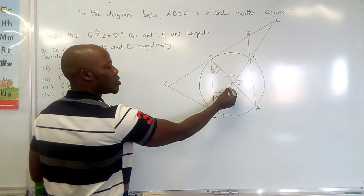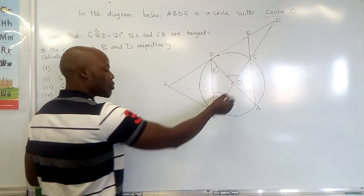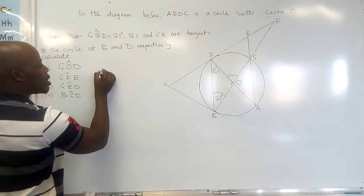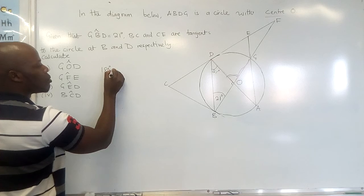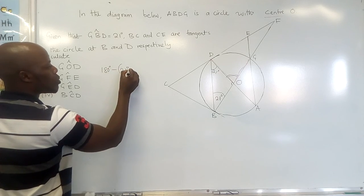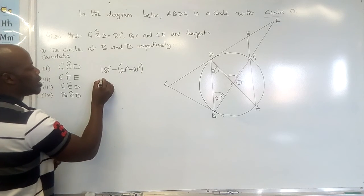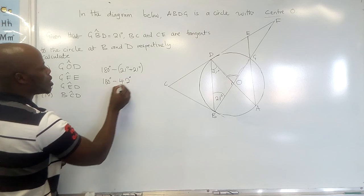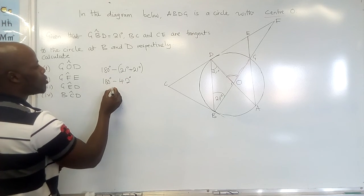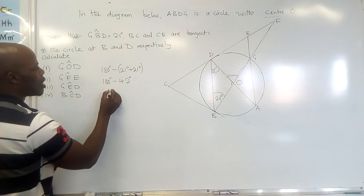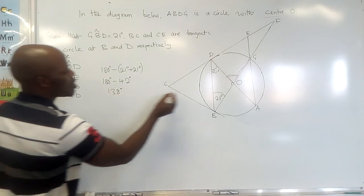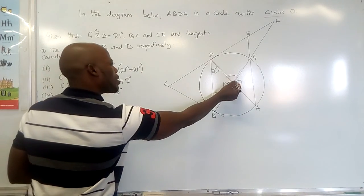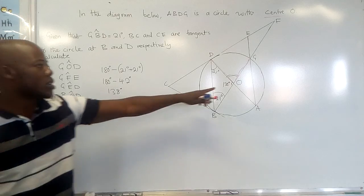So if we want to find this angle, we'll first find this inner angle, then use the straight line property where we subtract from 180. So 180 degrees minus (21 plus 21) degrees equals 180 degrees minus 42 degrees, which gives us 138 degrees. So 138 degrees is right here.